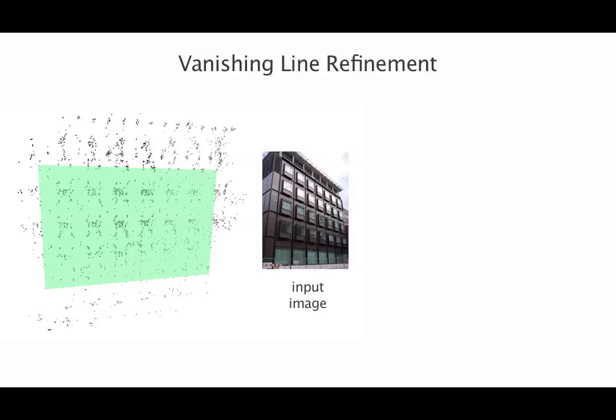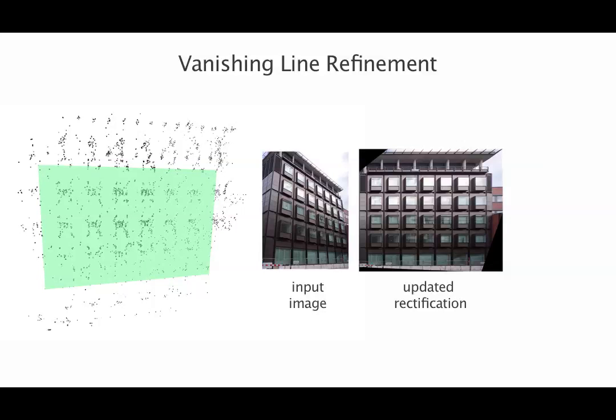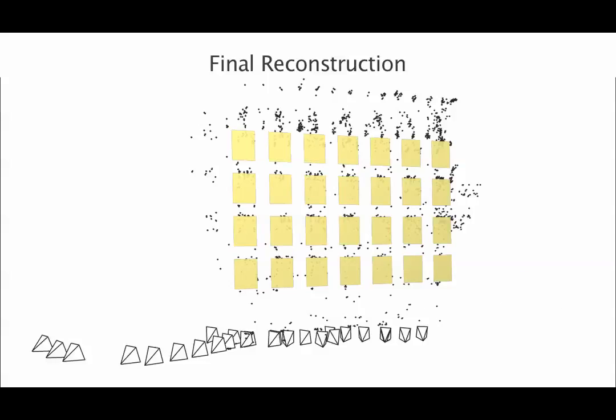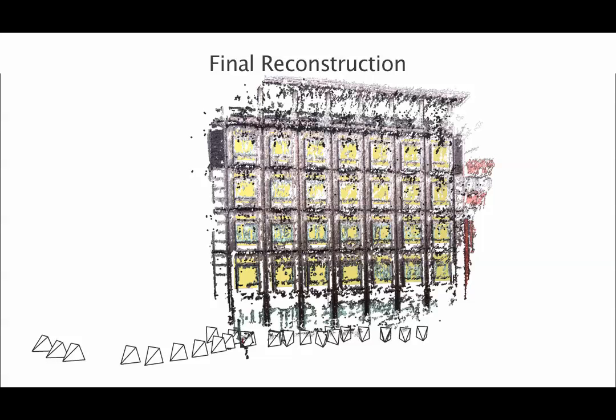Having established consistent image correspondences, we perform bundle adjustment using additional symmetry information. We iterate by refining the initial vanishing line estimates. In the end, we obtain the camera poses and the refined symmetry parameters of the input scenes.